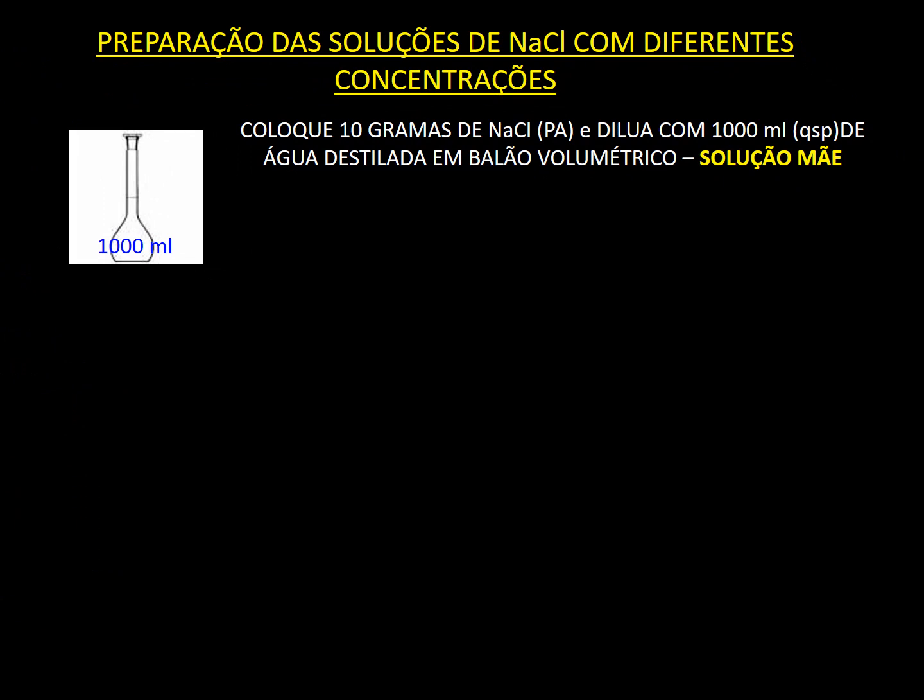A preparação das soluções de cloreto de sódio tem que ser muito bem feita, sem erros. Usamos balões volumétricos e água destilada ou deionizada. Coloca-se 10 gramas de cloreto de sódio para análise e dilui-se com quantidade suficiente para completar 1.000 ml com água destilada em balão volumétrico — chamamos isso de solução mãe. Esta solução deve ser guardada preferencialmente na geladeira e, se por acaso formar cristais, coloca-se o balão em banho-maria por alguns minutos para dissolvê-los.